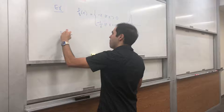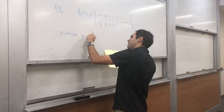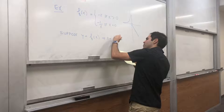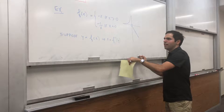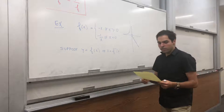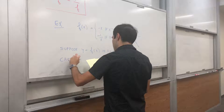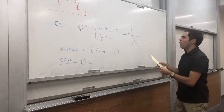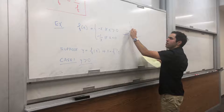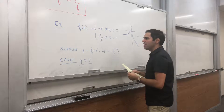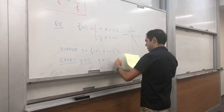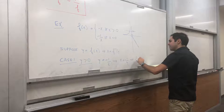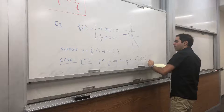Suppose y equals f of x. Then x equals f inverse of y, so to find f inverse of y we just need to find x. There are two cases. Case one: suppose y is positive. Looking at the picture, the only way y is positive is if we're in the case minus 1 over x. So y equals minus 1 over x, and in that case x equals minus 1 over y. So when y is positive, f inverse of y is minus 1 over y.